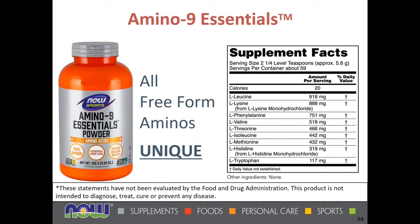Amino Nine Essentials is a blend of all free-form amino acids in proper ratios as determined by the National Academy of Sciences, including leucine, lysine, L-phenylalanine, L-valine, L-threonine, L-isoleucine, methionine, L-histidine, and tryptophan. This makes it quite a unique and popular formulation. A common question is whether the serving size is two quarter-level teaspoons or two and a quarter level teaspoons — it is two and one-fourth level teaspoons combined, which provides about 5.6 grams per serving.